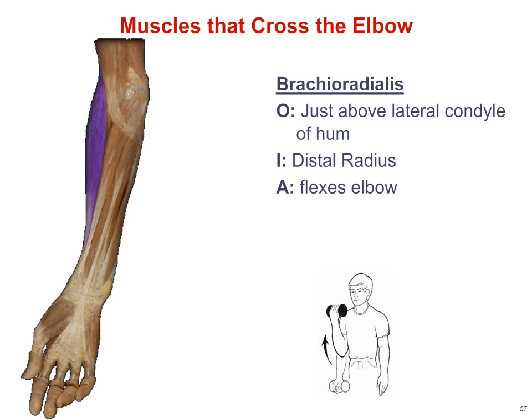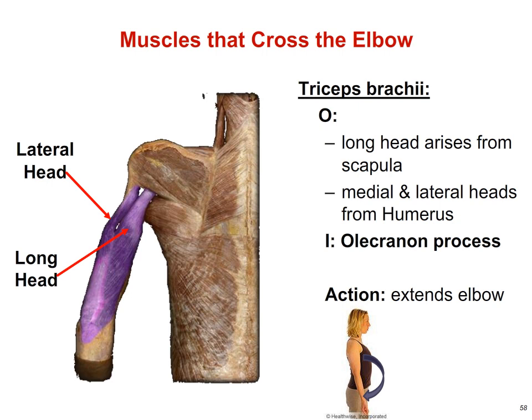Now let's look at the muscles of the posterior elbow, including the triceps brachii. The triceps brachii is named for its location in the upper arm and for having three heads. The long head originates from the scapula, while the medial and lateral heads originate from the humerus. All three heads insert onto the olecranon process of the ulna. The function of the triceps brachii is forceful extension of the elbow, making it an antagonist of the biceps brachii.